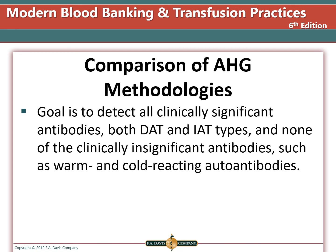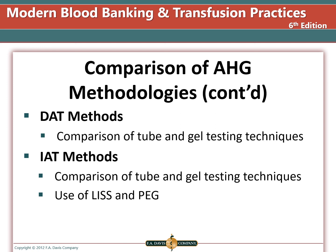The goal is to detect all clinically significant antibodies, both DAT and IAT types, and none of the clinically insignificant antibodies such as warm and cold reacting autoantibodies. The gold standard for blood bank testing is the tube method. Gel testing is more sensitive, but not just to clinically significant antibodies — you could end up detecting more clinically insignificant antibodies. Tube methods are more labor intensive and require skilled staff. Gel can be automated and standardized. Solid phase is more expensive and more sensitive than gel, which can lead to increased cost in workups of false positive tests or positive tests for antibodies without clinical significance.